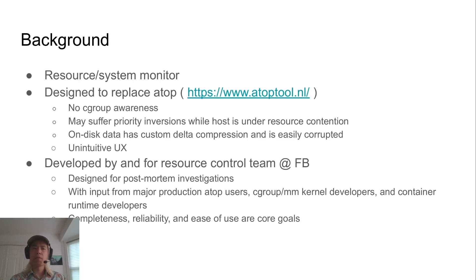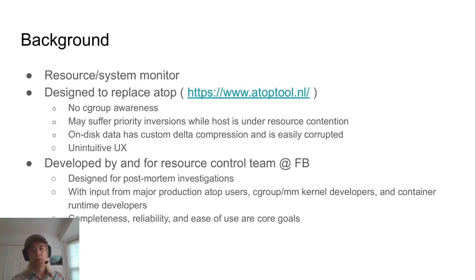Second, ATOP also suffered from priority inversions when the host was under resource contention. This happens for a number of reasons, mostly quirks in the kernel, but it did happen nonetheless. Third, the on-disk data has custom delta compression, and if you lost a keyframe you would lose huge swaths of data — which ends up being the most important data, since you really only want to investigate things when resources are being heavily contended. And then the final point is that ATOP had a somewhat unintuitive user experience; it was hard for new users to figure out how to use it.